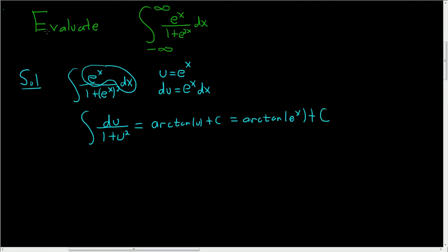Okay now let's go back to our improper integral and carefully work it out. So we have the integral from negative infinity to infinity of e to the x over 1 plus e to the 2x dx. Let's break this up. We'll go from negative infinity to 0, e to the x over 1 plus e to the 2x dx.